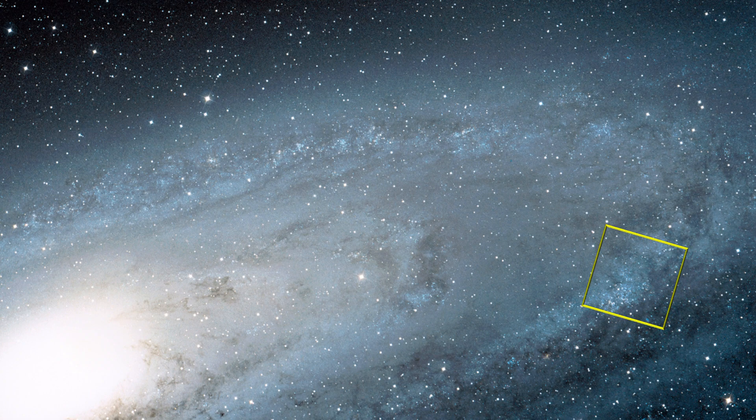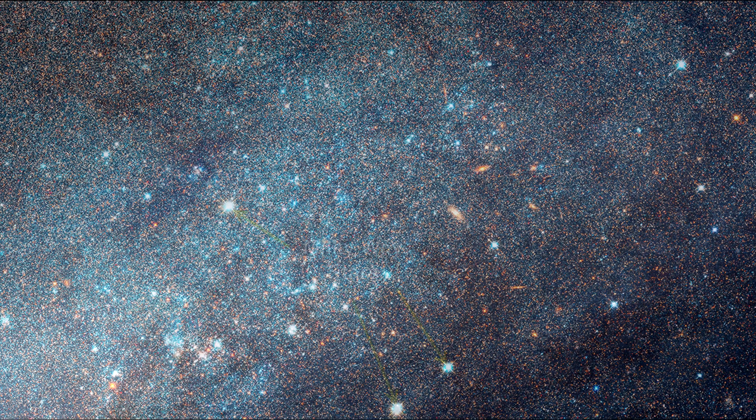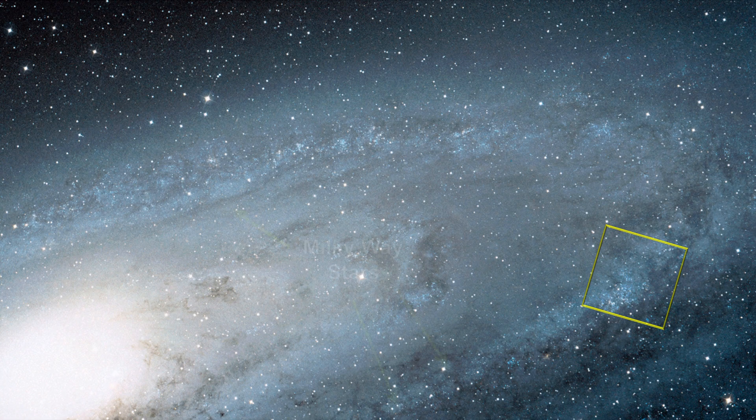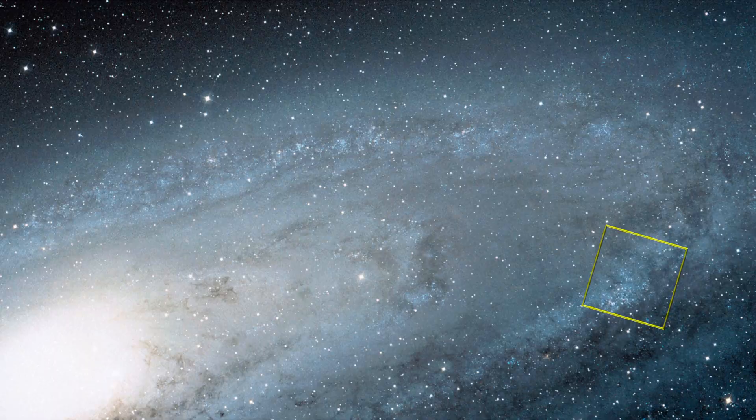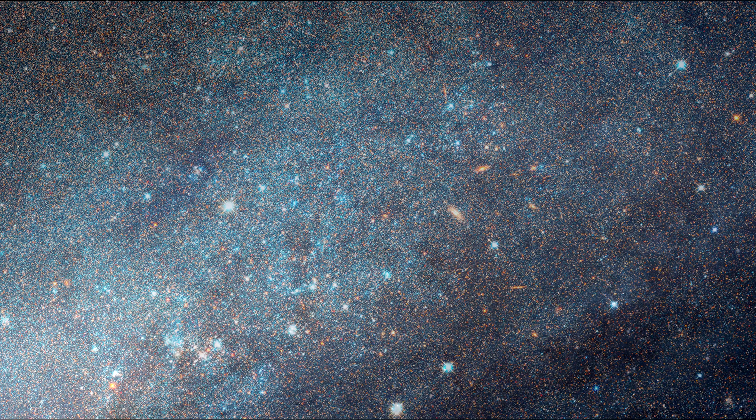Zooming into the boxed field, we see some foreground Milky Way stars in the line of sight to Andromeda, and a couple of distant spiral galaxies shining through Andromeda's disk.